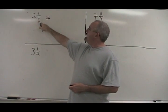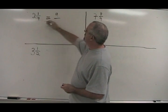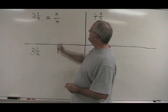2 times 4 is 8, plus 1 is 9. Our new numerator is 9, the denominator is 4, it stays the same.